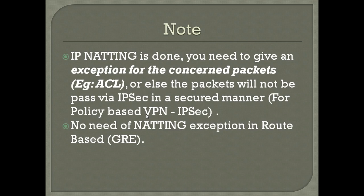Take note: if you have NAT configured on the router and you are using IPsec, NAT will block the packets from being transmitted via the VPN. In order to overcome this issue, you need to create an access list exemption for the IPsec packets so that they can reach the concerned peer. This is mainly for a policy-based VPN — that is, unicast packet VPN — and this exemption is a must.